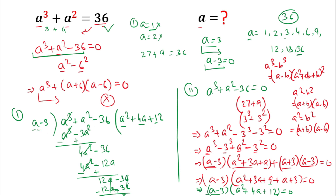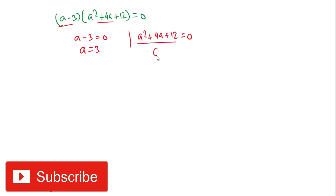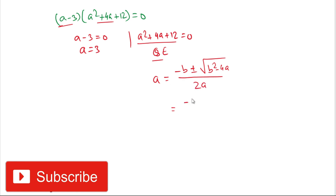We have confirmed two factors by both methods: (a - 3) and (a² + 4a + 12). Since their product equals zero, either a - 3 = 0, giving a = 3, or a² + 4a + 12 = 0. The second factor is a quadratic equation. Using the quadratic formula: a = (-b ± √(b² - 4ac)) / 2a, where b = 4, a = 1, c = 12. So a = (-4 ± √(16 - 48)) / 2.